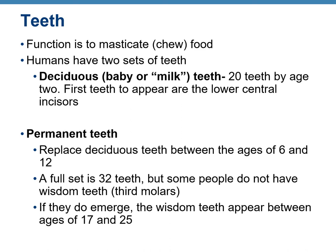The deciduous teeth get replaced by the permanent teeth, which are stronger and bigger and usually replace the deciduous teeth between ages 6 and 12. A full set of permanent teeth includes 32 teeth, but some people may not get the third molars — the wisdom teeth — until late adulthood, or may never get them. If wisdom teeth do emerge, they appear between ages 17 and 25 and can cause pain due to improper orientation or insufficient jaw space.